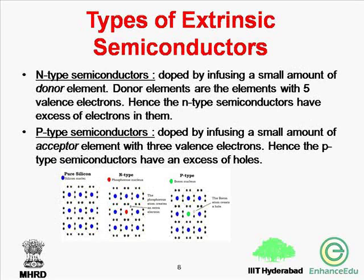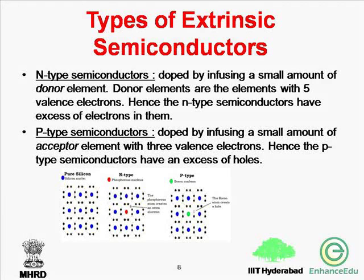N-type semiconductors are doped by infusing a small amount of donor elements — elements with five valence electrons. Hence n-type semiconductors have an excess of electrons. P-type semiconductors, on the other hand, lack electrons; they are doped by infusing a small amount of acceptor elements with three valence electrons, giving p-type semiconductors an excess of holes.